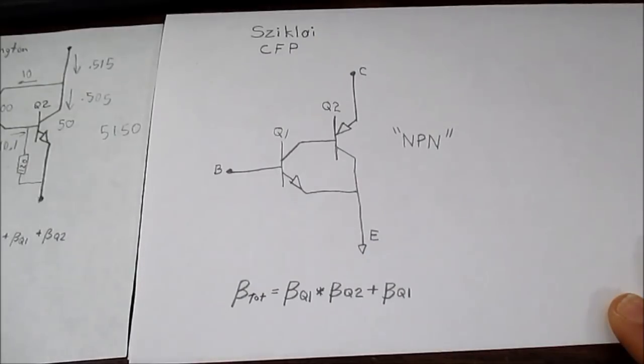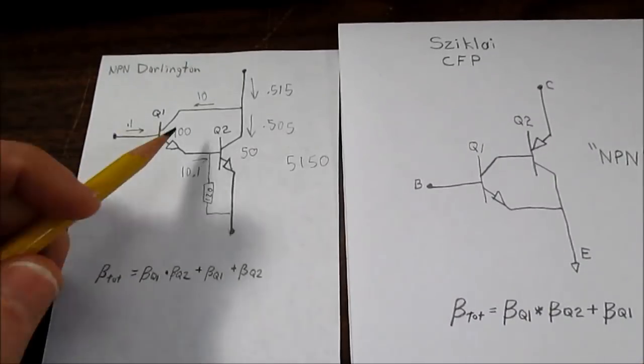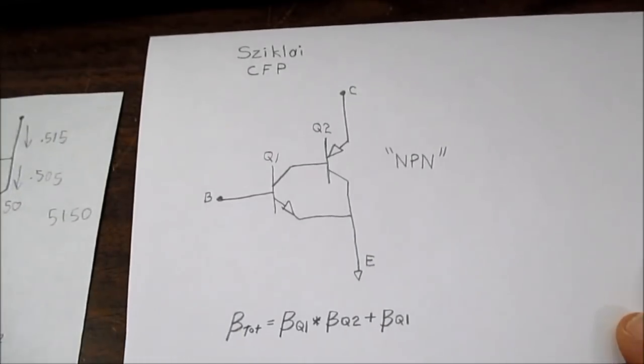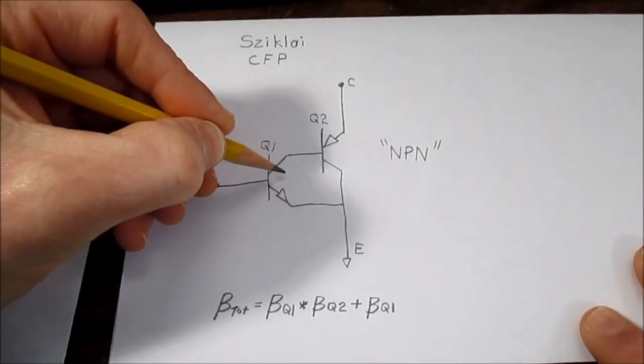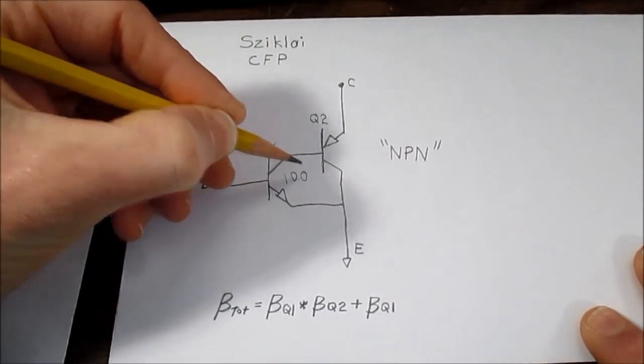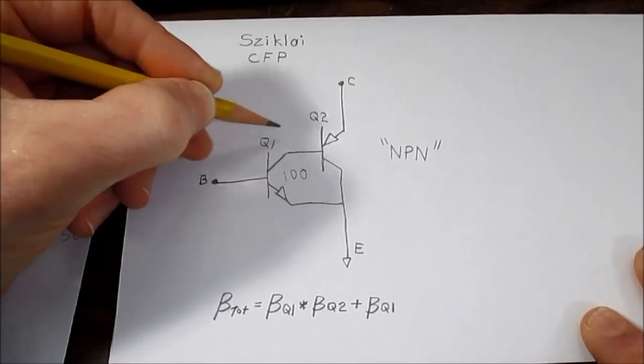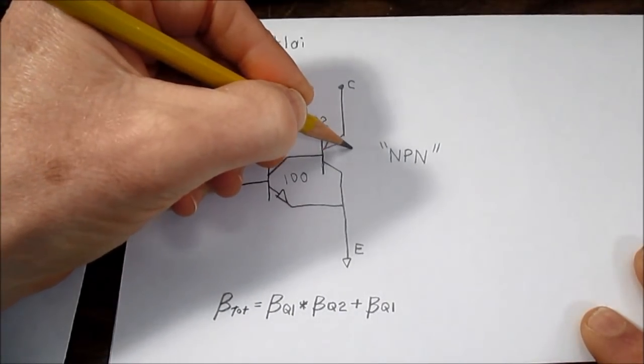So let's take a look at the gain and we'll make up a situation similar to the Darlington circuit we did before. So we'll say that this transistor has a gain of 100, that's Q1, and Q2 will have a gain of 50.